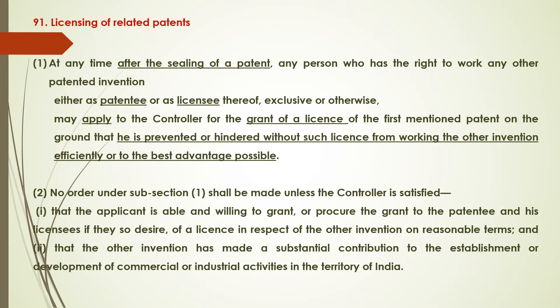Section 91: Licensing of Related Patents, Subsection 1. At any time after sealing of a patent — this patent will be termed as the First Mentioned Patent or First Patent — any person who has the right to work any other patented invention (the Second Patent), either as patentee or licensee, exclusive or non-exclusive, may apply to the controller for grant of a license of the First Mentioned Patent on the ground that he is prevented or hindered without such license from working the other invention efficiently or to the best advantage possible.